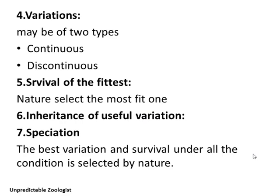Survival of the fittest — nature selects the most fit organism. Those with favorable conditions survive, while the weak perish. The next postulate is the inheritance of useful variations. Those variations which are useful for the next organisms are inherited, and these inherited variations lead to the formation of new species — that is speciation.